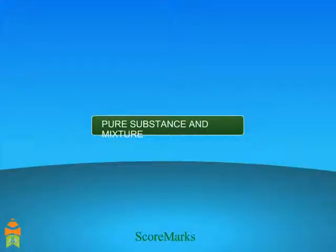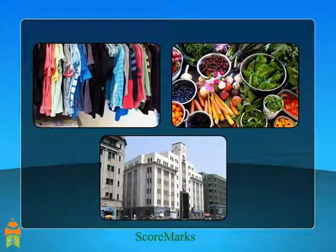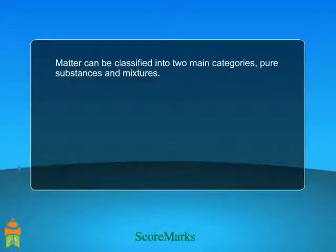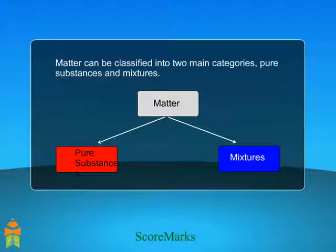Pure substance and mixture. Everything around us is made up of matter. Matter can be classified into two main categories, pure substances and mixtures.